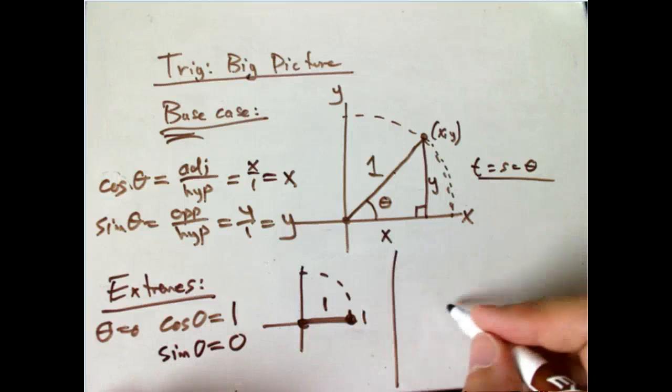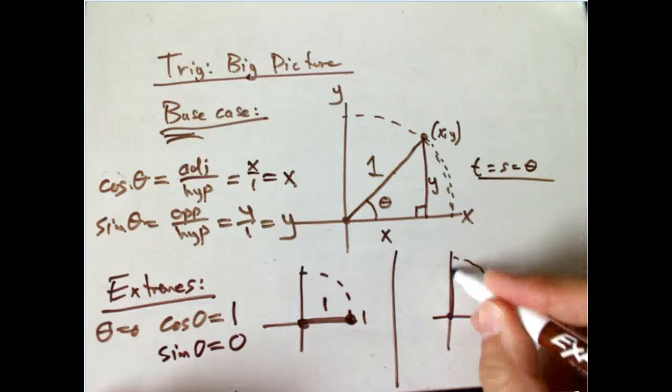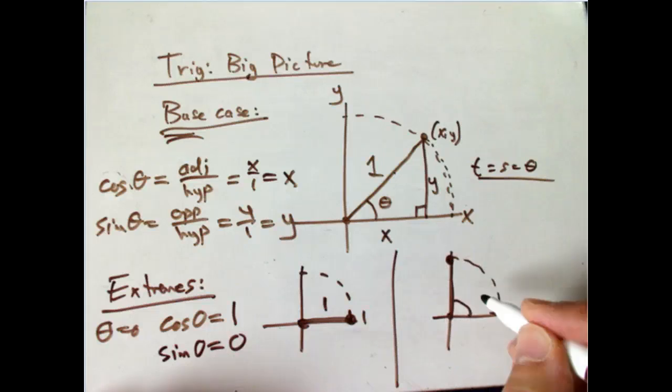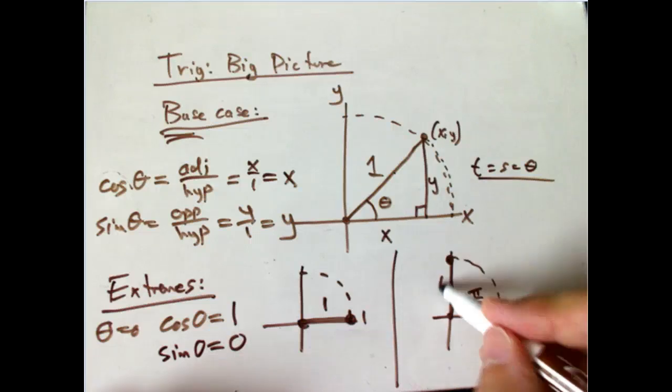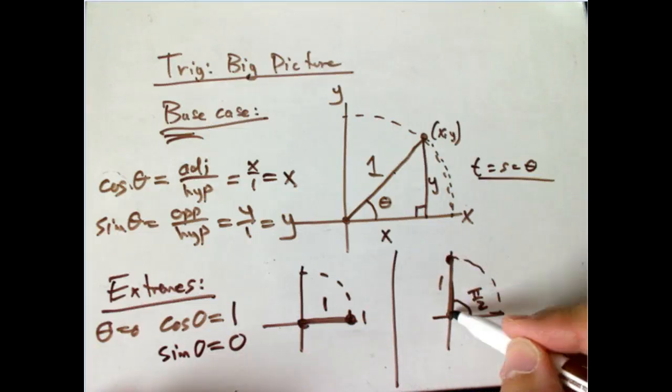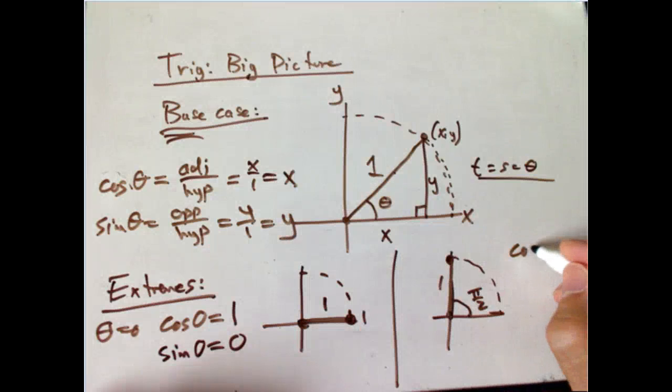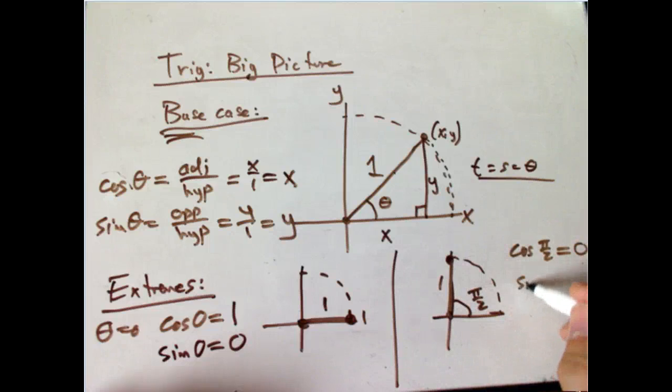And then the other extreme, while we're talking about the first quadrant only, is going up here. Theta is 90, or pi over 2, in radians. And that's, again, if I drop the perpendicular, it just is the same thing as the hypotenuse, essentially. And so that's not really an honest-to-goodness right triangle, but oh well. It still makes sense with this definition. And we get cosine of pi over 2. That's the X coordinate of that point. That's 0. And sine pi over 2 equals 1.